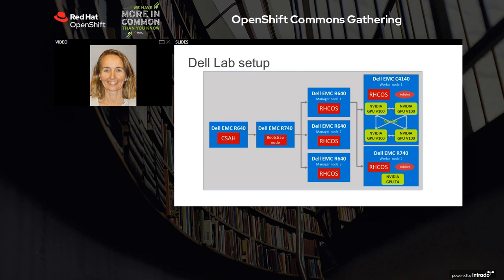Now we'll look at the lab setup in the Dell Technologies AI Innovation Lab in Austin. On the left is the cluster system admin host, which serves as a single entry point into the OpenShift cluster. The OpenShift nodes are in their own private subnet for security reasons — you use the cluster system admin host to gain SSH access and administer the cluster. We have the bootstrap node doing cluster setup, which can be added as an additional worker node after setup is completed. Then three Dell R640 manager nodes serve as the control plane. On the right, two worker nodes with GPU acceleration: the C4140 with four V100 GPUs for training benchmarks, and the Dell R740 with one T4 for inference benchmarks.